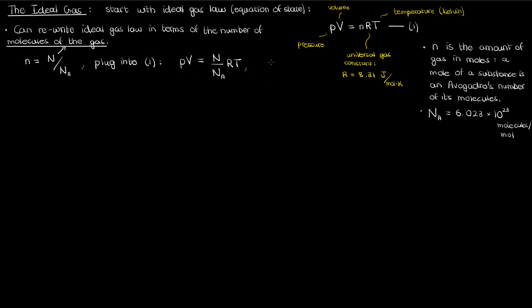Once you do that you get the following equation. You can then introduce a new constant k, defined as the universal gas constant R divided by Avogadro's number. When you do the calculation you get a value of about 1.381 times 10 to the negative 23 joules per Kelvin. This, by the way, is known as the Boltzmann constant.